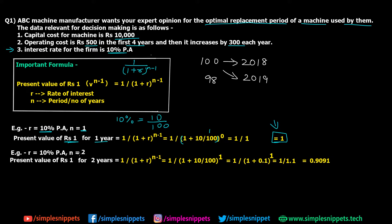For n = 2 (second year), it's raised to 1: 1 / (1 + 0.1)^1 = 1 / 1.1 = 0.9091. So 1 rupee in the second year is equivalent to 0.9091 rupees — the money value has changed. This trend continues as n increases, and if the rate stays constant the money value fluctuates at a constant rate. We need to calculate an extra column v^(n-1) compared to the previous numerical.